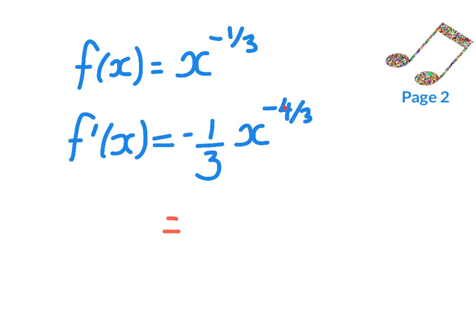and the numerator is the power. So I can restate this as negative 1 over 3 times the cube root of x to the power of 4.